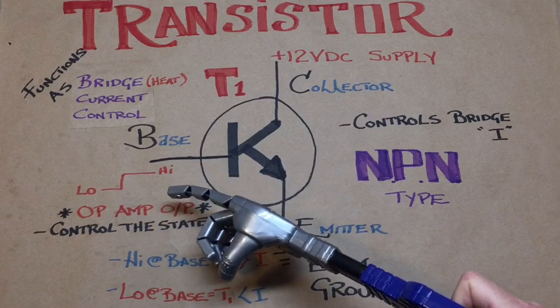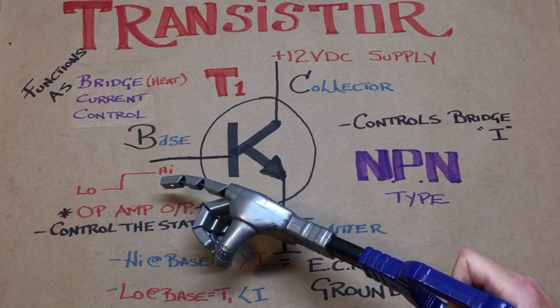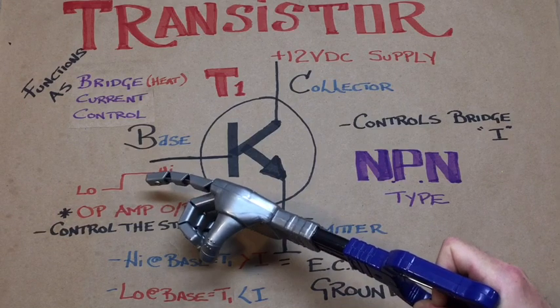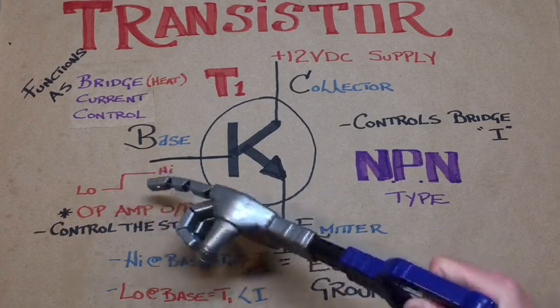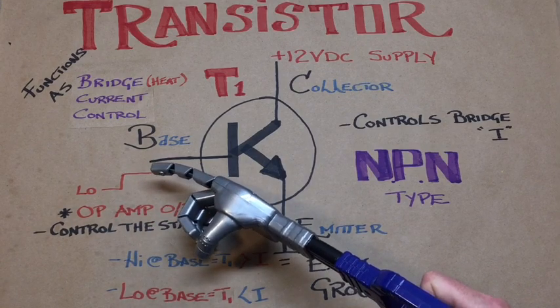This biased voltage is actually coming from the comparator output. The comparator is looking at the reference and the input voltage from the bridge circuit. If we're looking for less heat, we have a low output. More heat, we have a high output.